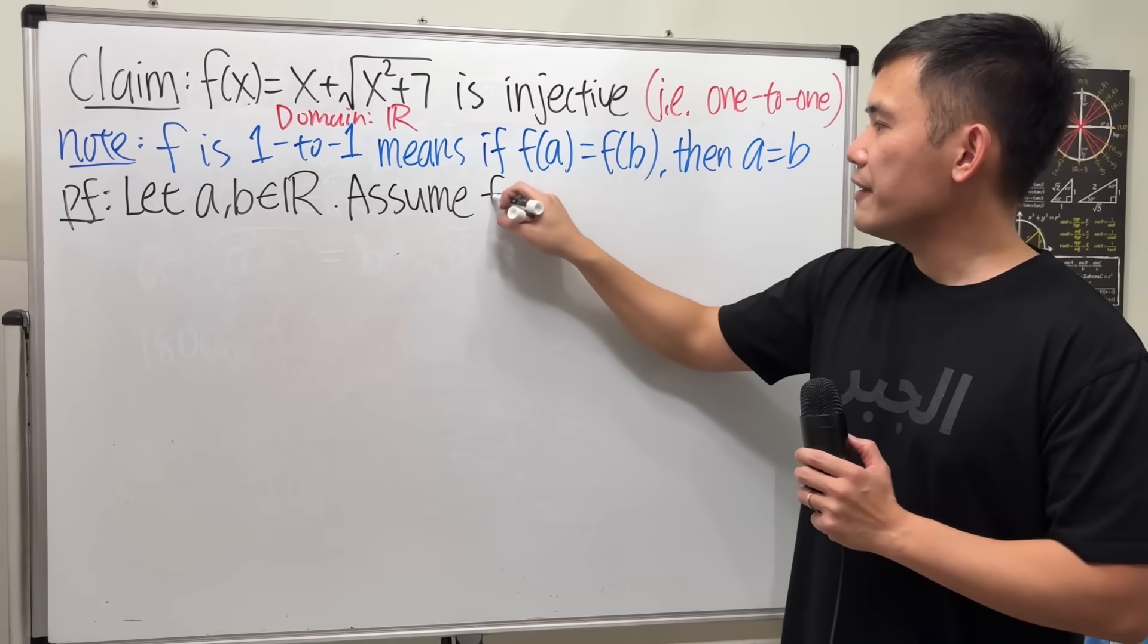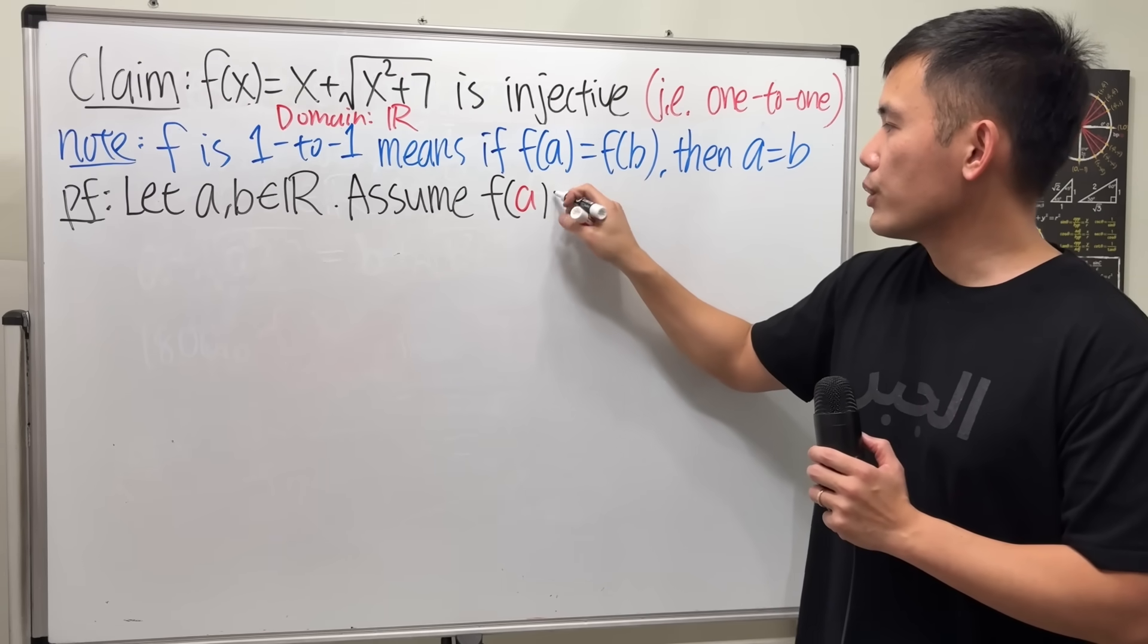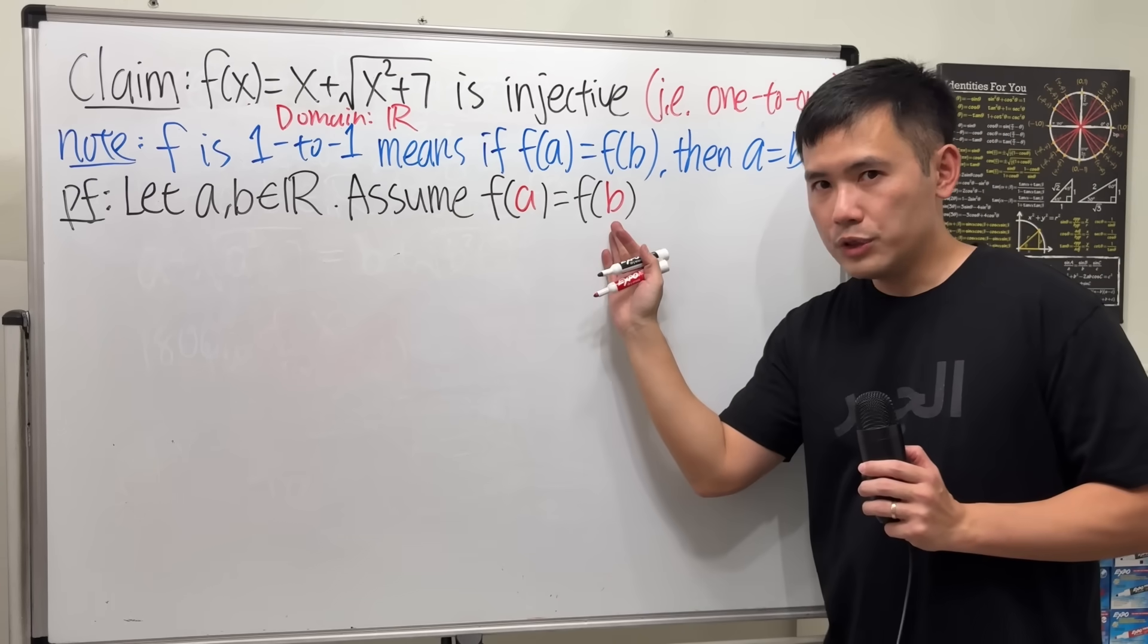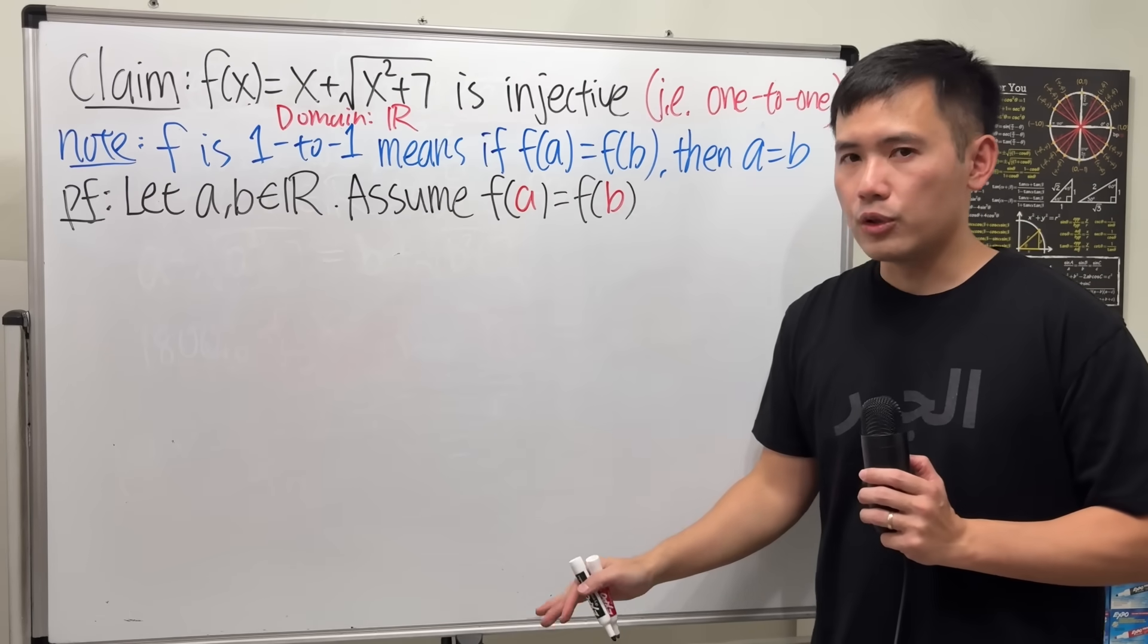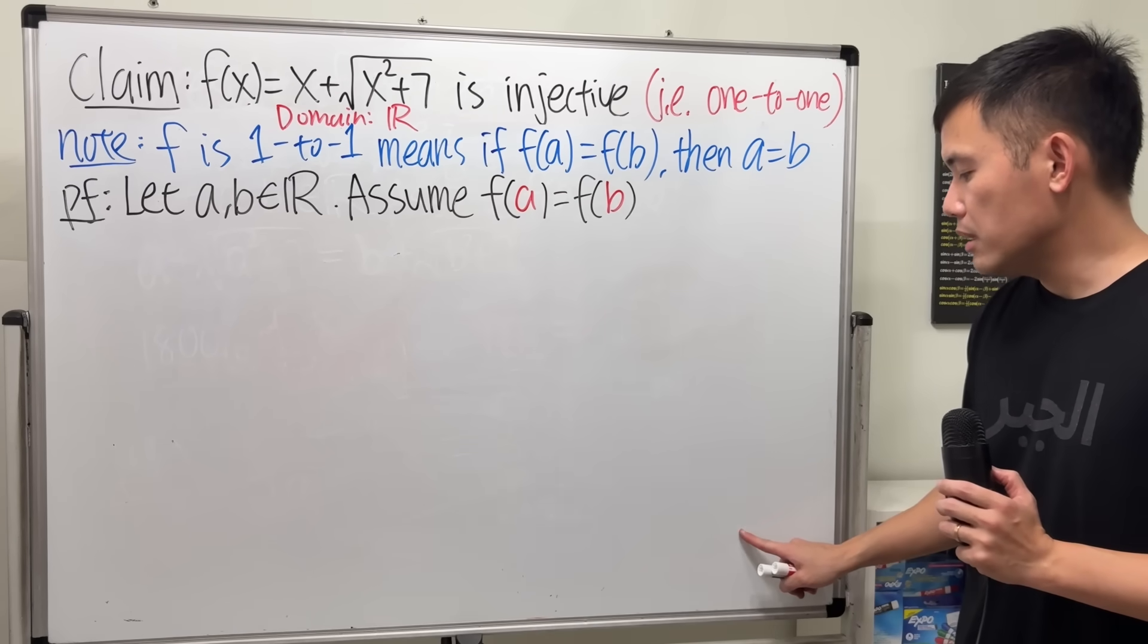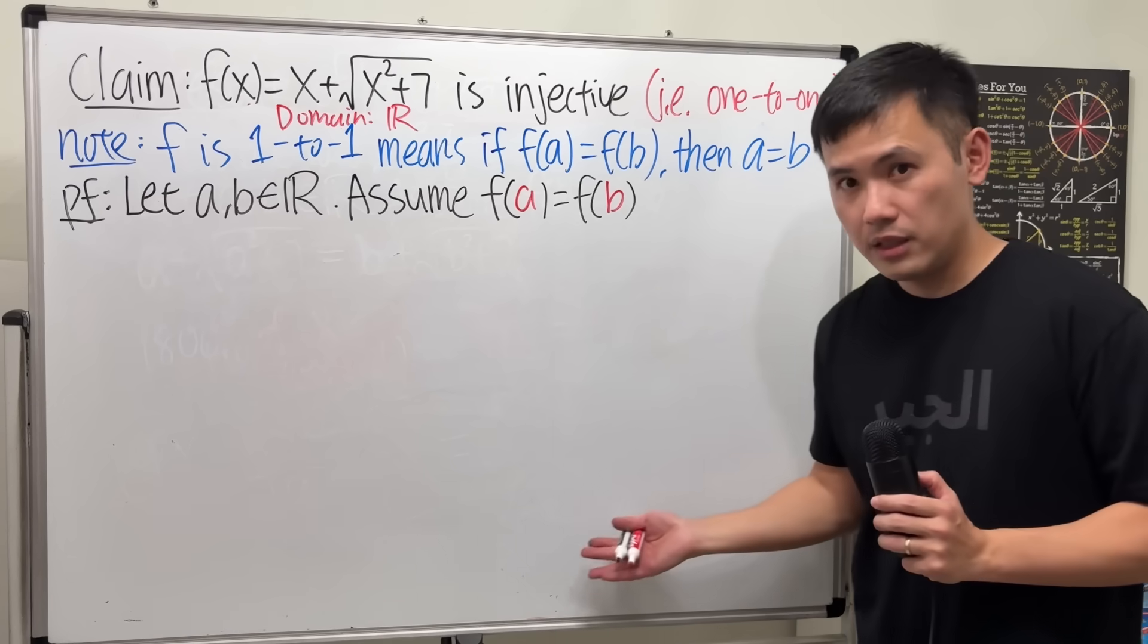this right here, f of a is equal to f of b. Once we have this, later on we'll do some algebra, and hopefully at the end we can show that a is equal to b. If we can achieve that, then we are done.